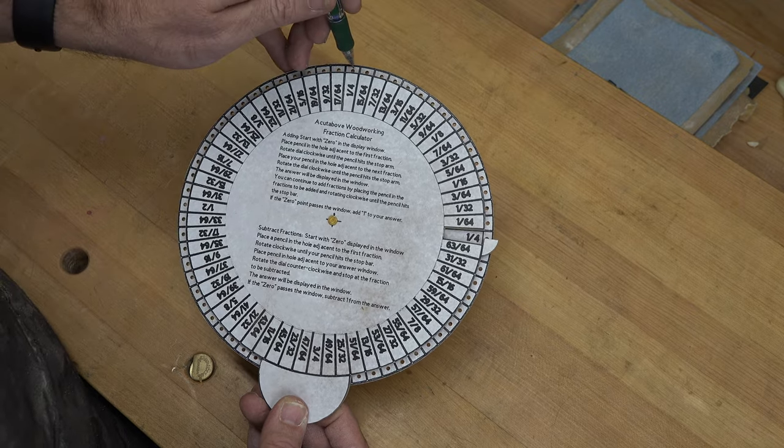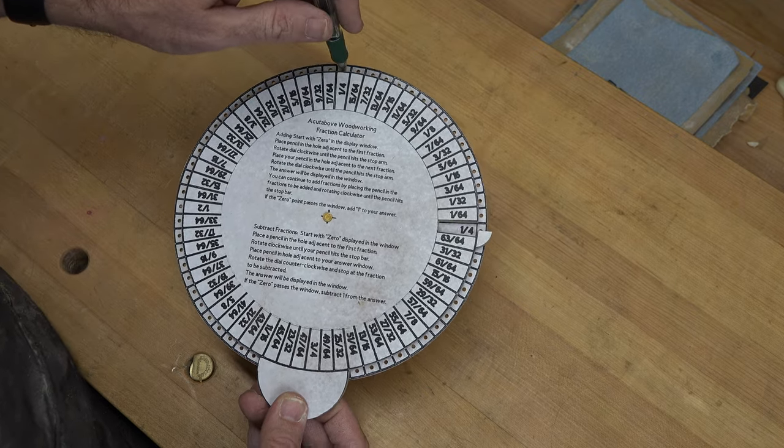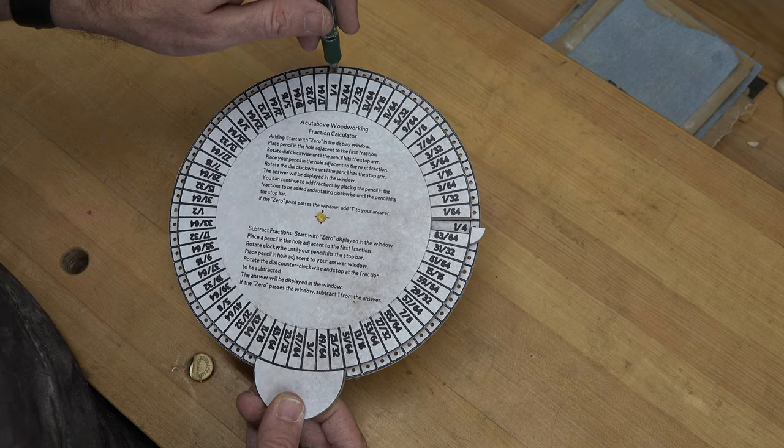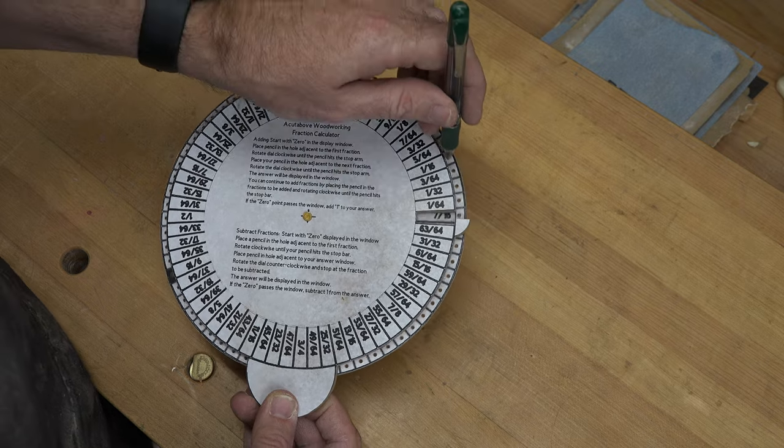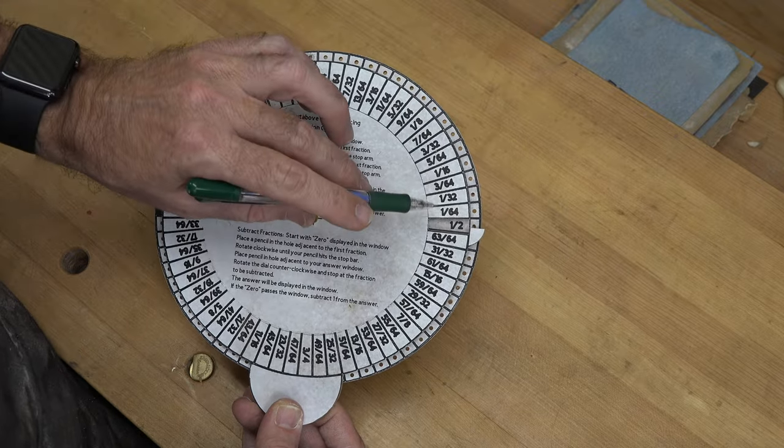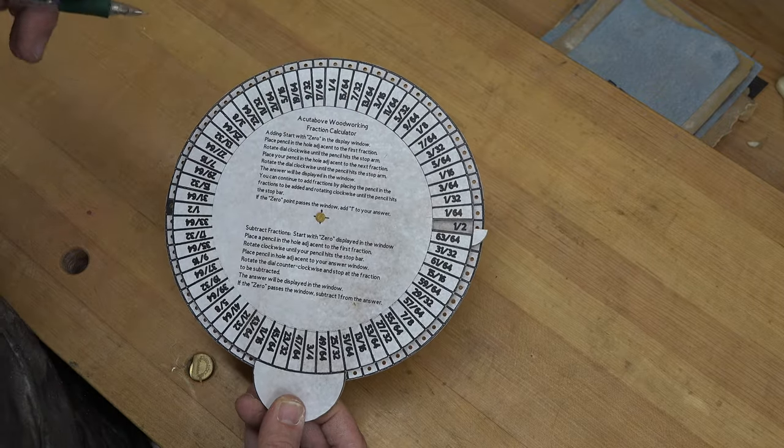What if we add another quarter? Well, we all know that a quarter and a quarter is 1/2. So we put your pencil in the hole at 1/4, spin it around, just there it stops, and we have 1/2 in our answer window.